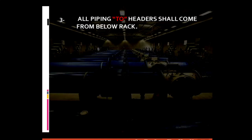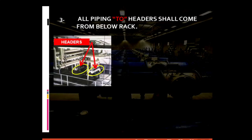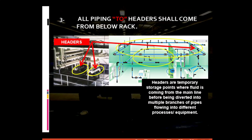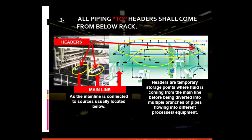For general piping requirement number three: all piping to headers shall come from below the rack. Headers are considered to be temporary storage points where fluid coming from the main line is held before being diverted into multiple branches flowing into different processes or treatments. Since the source is typically located underneath or below, it is natural that piping connected to the header should come from below the rack, thus conserving free space at the bottom where workers can work properly.